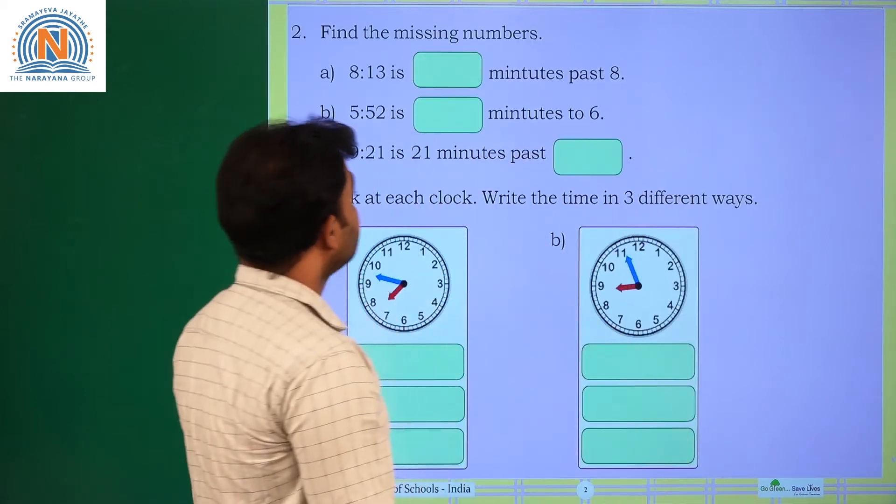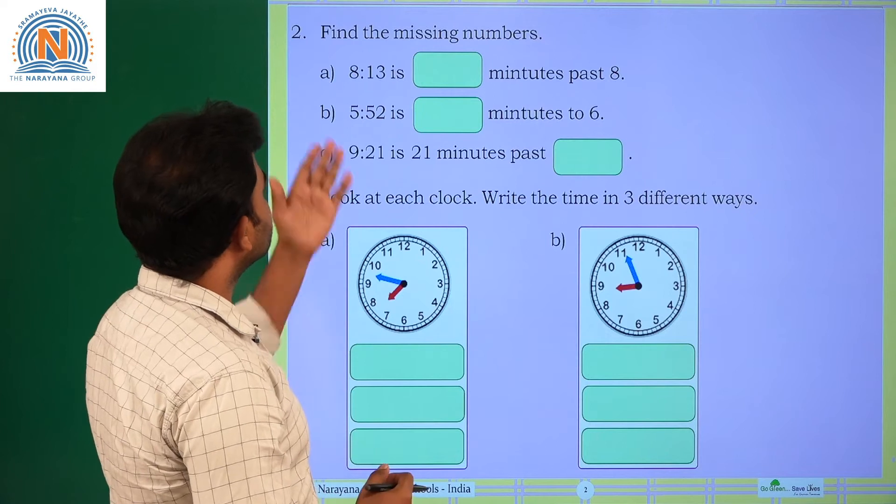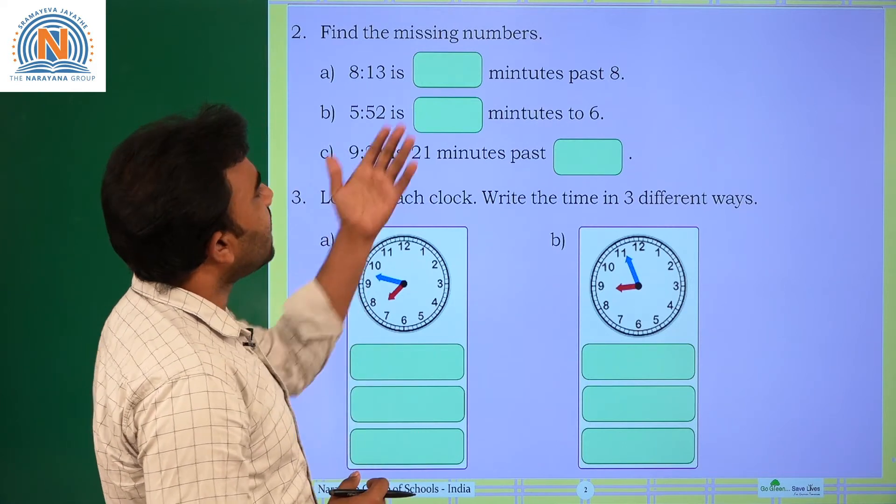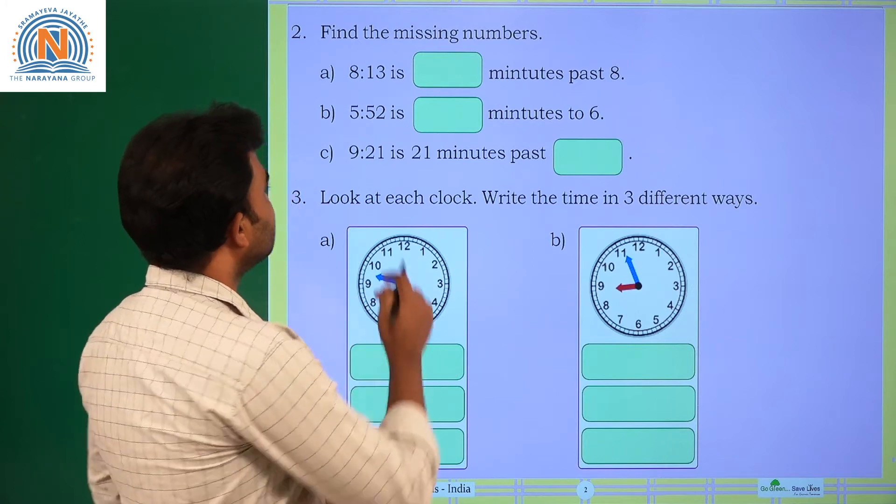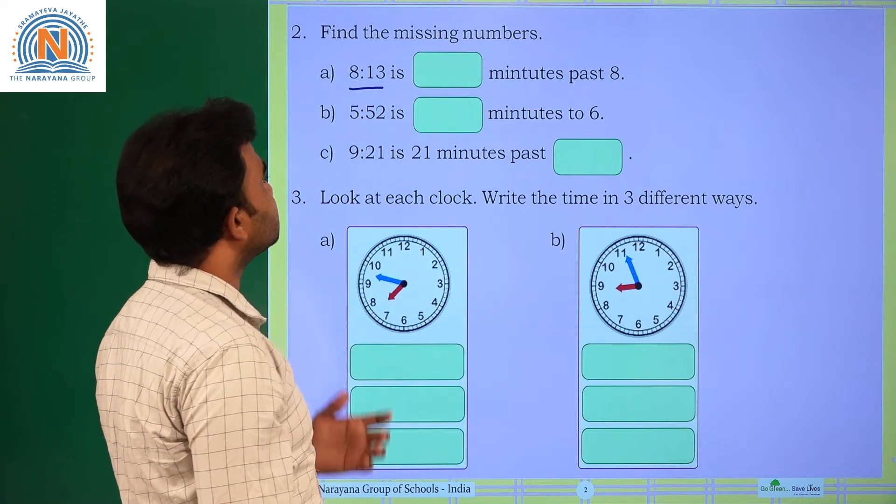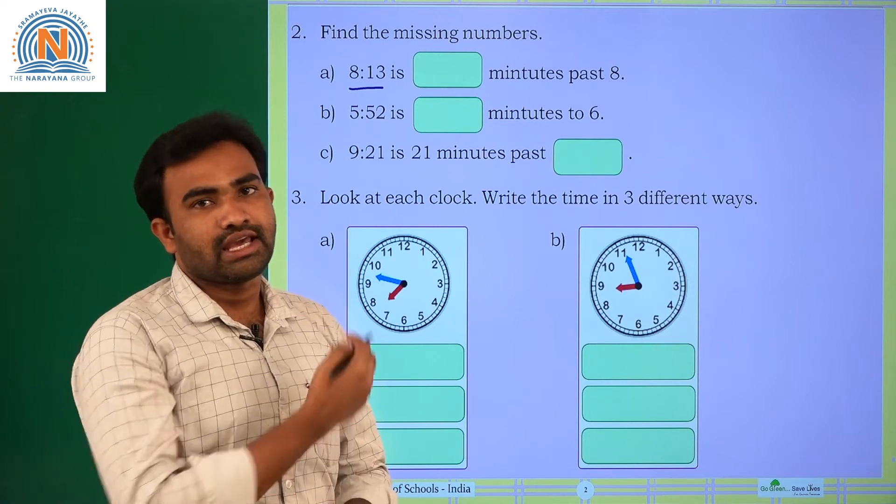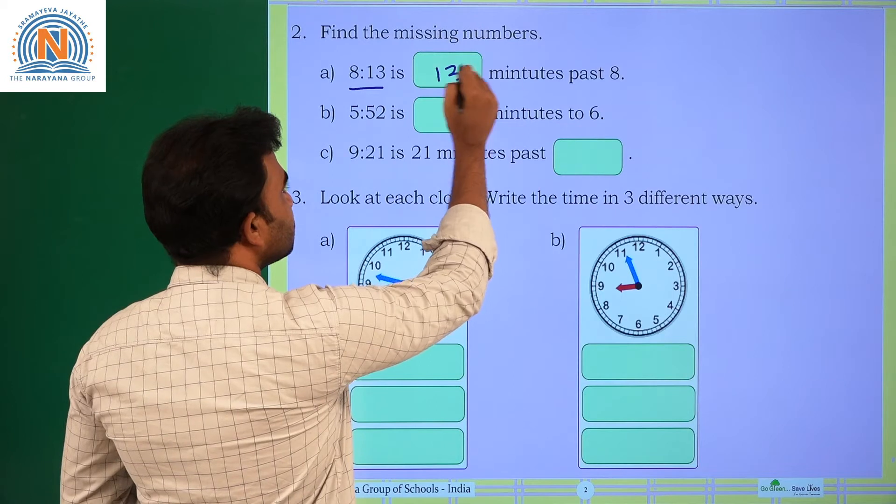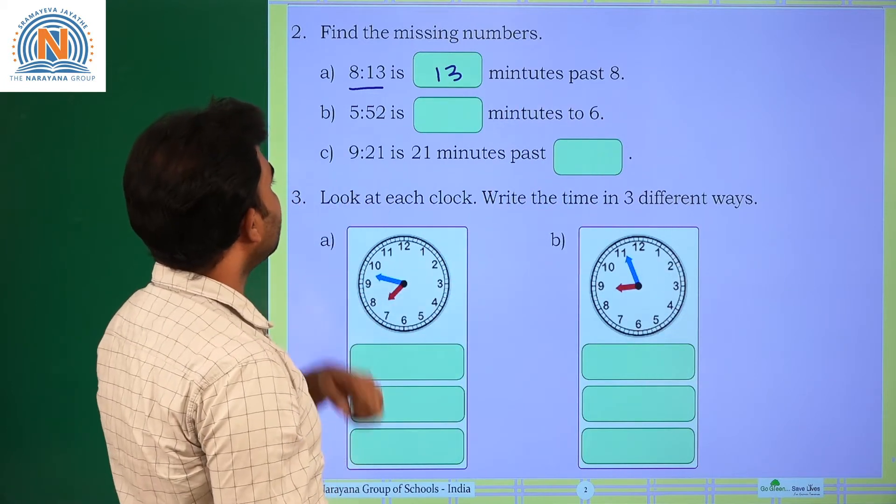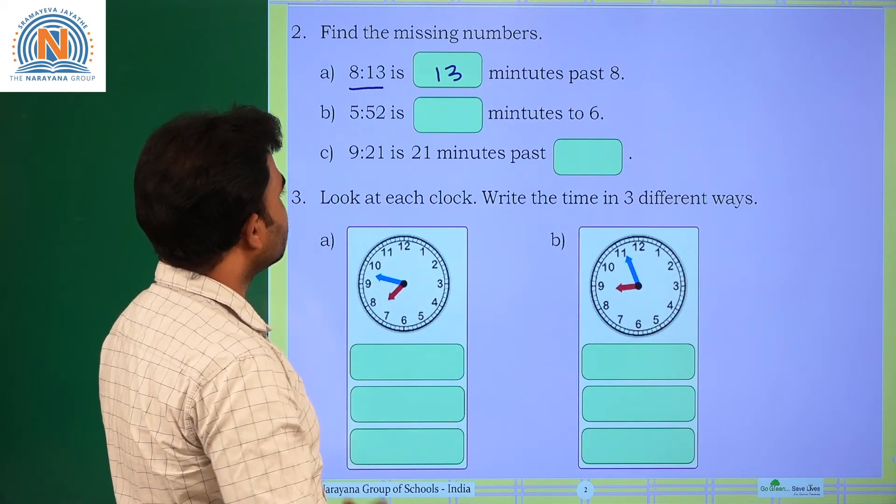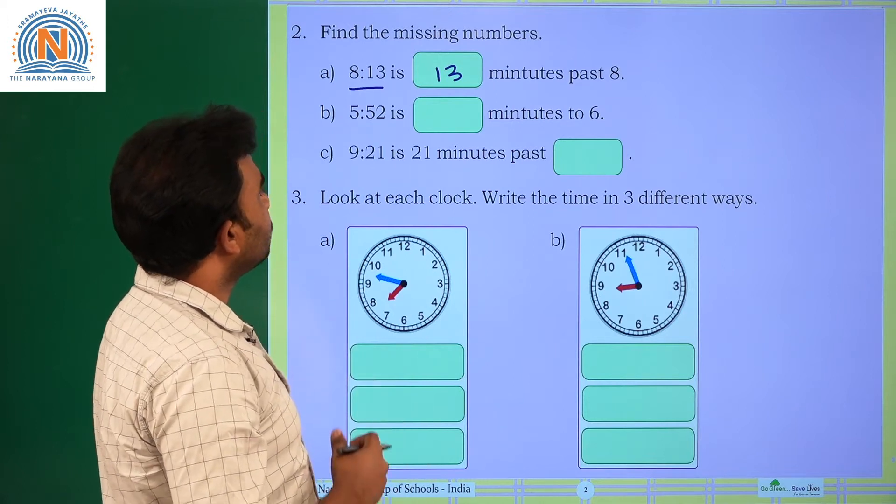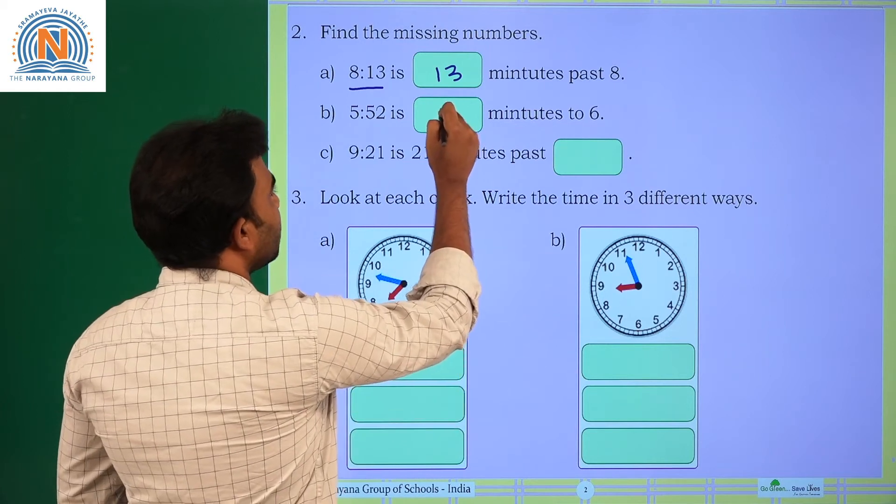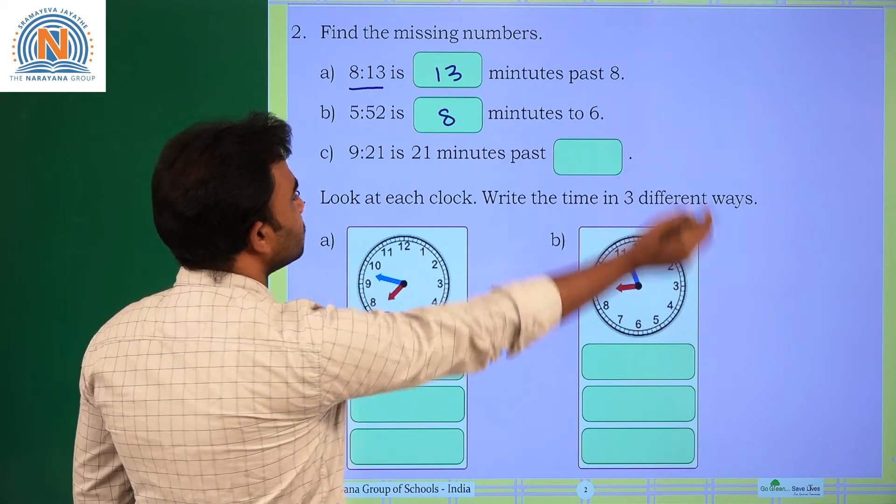Next, find the missing numbers. See a problem: 8:13 is dash minutes past 8. See, this time can be read as 13 minutes past 8. So, 13 minutes past 8. Next one, 5:52 that can be read as 8 minutes to 6. So, 8 minutes to 6.